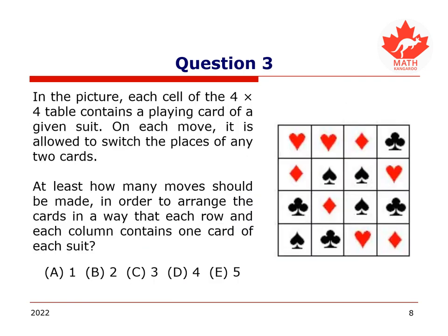In this third question, we are asked to consider the cells of a 4x4 table containing playing cards of a given suit. On each move, it is allowed to switch the places of any two cards. At least how many moves should be made in order to arrange the cards in a way that each row and each column contains one card of each suit? Again, I encourage you to pause the video to attempt the problem on your own.